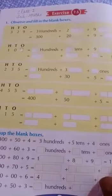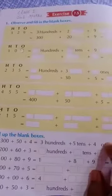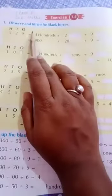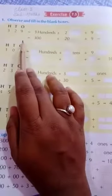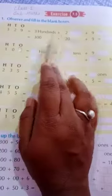Now children, today we are going to do exercise 7.5 of a maths book. And question number 1, observe and fill in the blank boxes. We have to observe and fill in all the boxes.